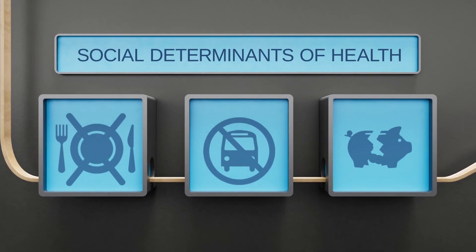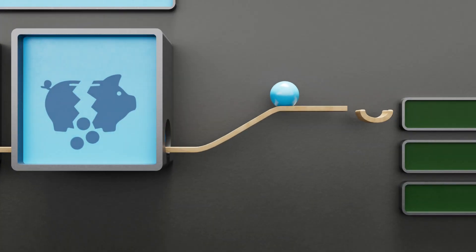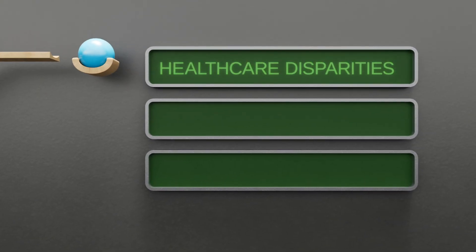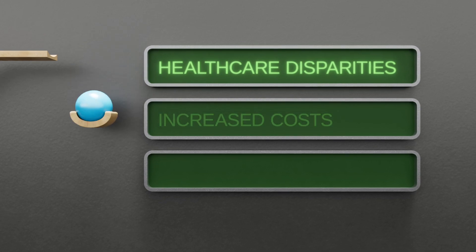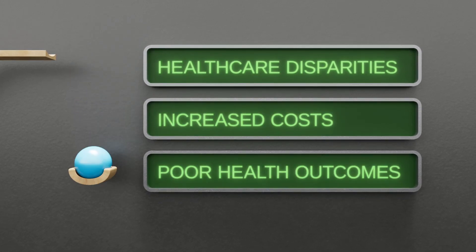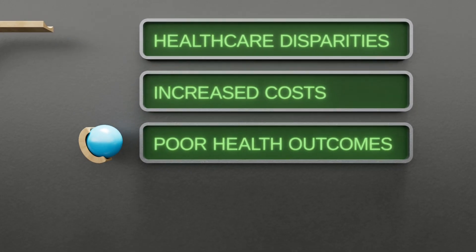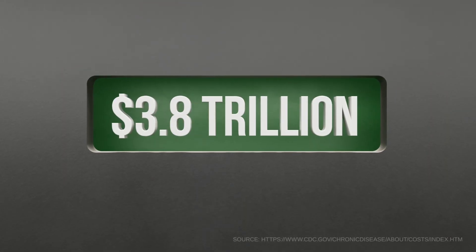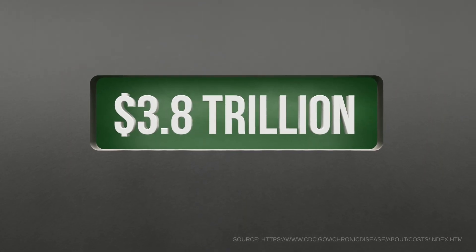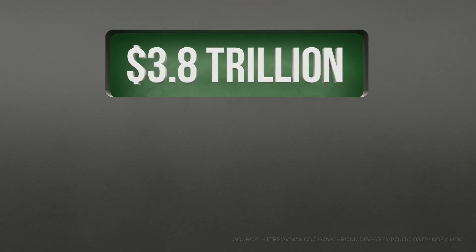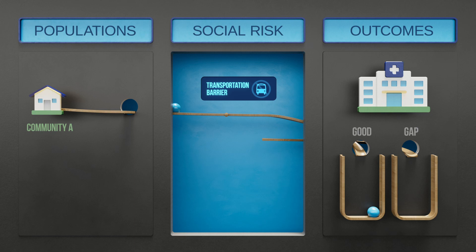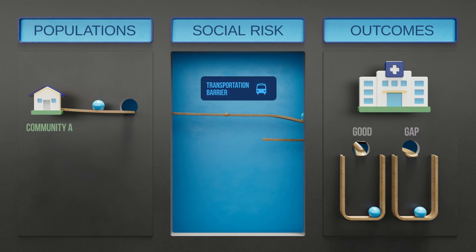Social determinants of health lie at the heart of most health care disparities, increased costs, and poor health outcomes. Yet, despite over $3.8 trillion in annual health care expenditures, organizations have a limited view into how social factors affect health, cost, utilization, and quality attainment.